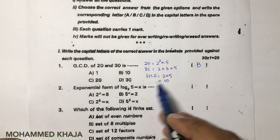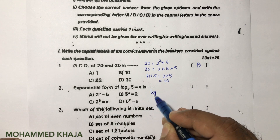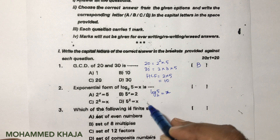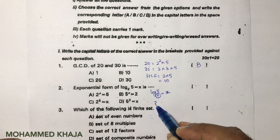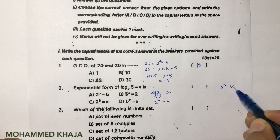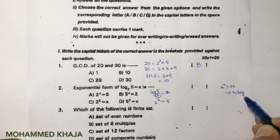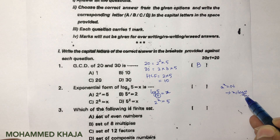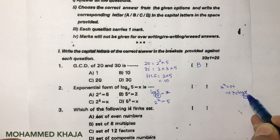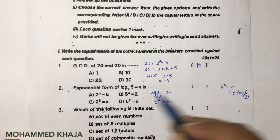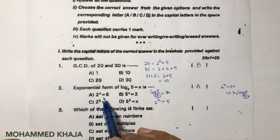Next: exponential form of log 5 to the base 2 equals x. According to the definition, if a power x equals n, then x equals log n to the base a. So when converting from logarithm form to exponential form, here you get 2 power x equals 5. The correct option is A.